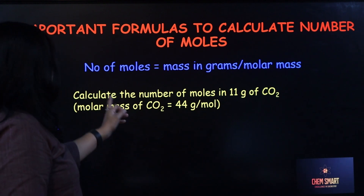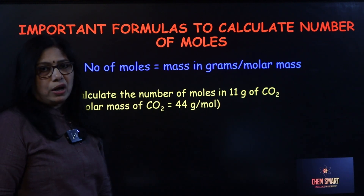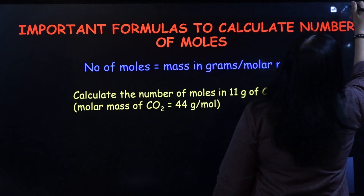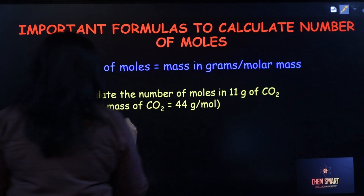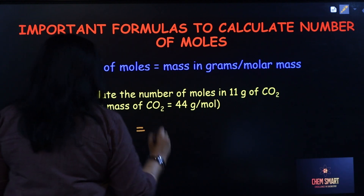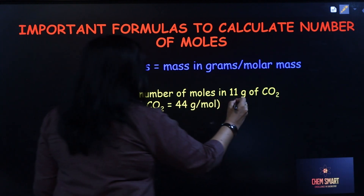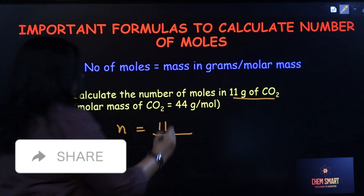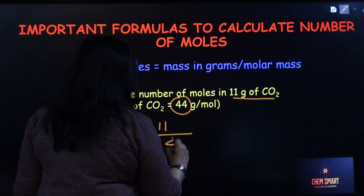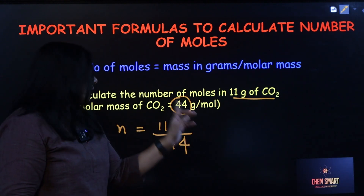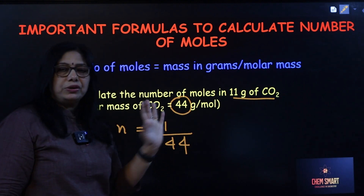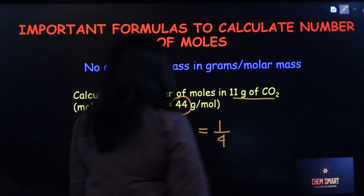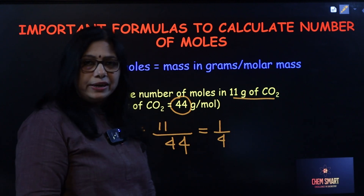I have taken an example here. You have to calculate the number of moles in 11 grams of carbon dioxide. Number of moles (symbol: small n) equals mass in grams — 11 grams — divided by molar mass of CO₂, which is 44 (that is 12 + 16×2 = 44). So 11 divided by 44 gives you 1/4 or 0.25 moles.